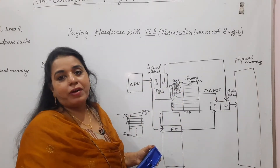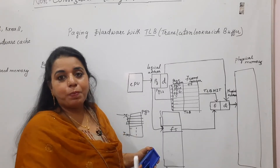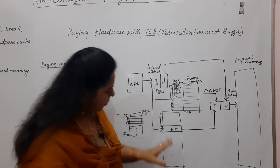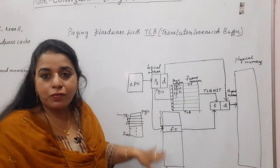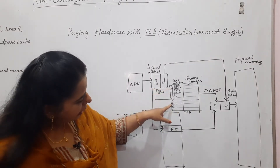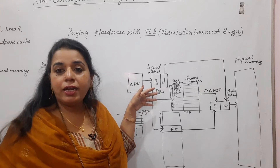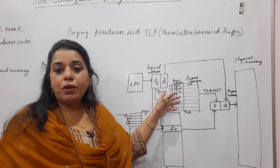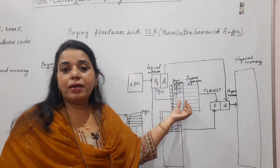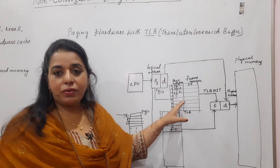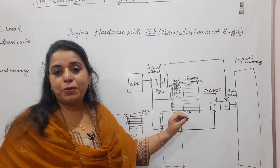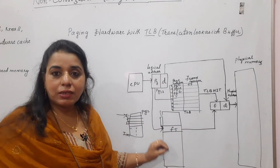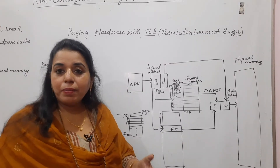TLB has a very fast access — it is associative high-speed cache. In the page table, the search is sequential, one after the other. Whereas in the TLB, the search is made for all entries simultaneously at once. For example, if 20 nanoseconds are used to search a page number in the TLB, it may take 80 nanoseconds to search the same page number in the page table — that is how much time is saved.